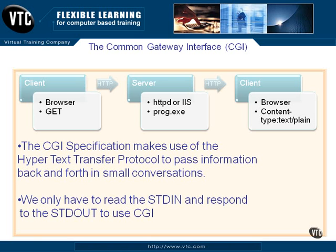After the header comes back with the content type, two new lines will be in there so that there's a blank line — that's the HTTP spec, that's the standard. And then the actual information itself — what you know as the HTML: the head tags, the body tags, the closed HTML — all of that stuff is the content if an HTML page has been sent. So HTTP is still the bottom line; it's still the carrier of the information back and forth, and we only have to read standard in and respond to standard out.